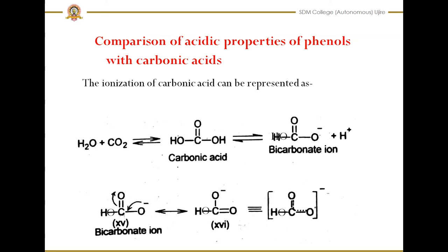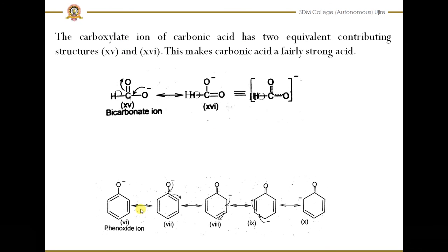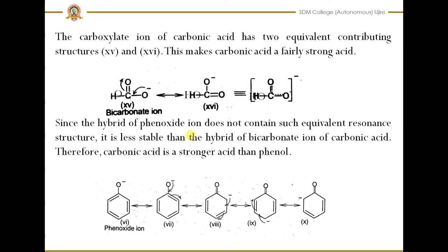Similar to carboxylic acid, carbonic acid gives two equivalent resonance structures for the bicarbonate anion. In the case of phenols, although we get more resonance structures (structures 8, 9, 10), these are less stable because the negative charge migrates to the less electronegative carbon atoms — making those structures not equivalent. But in the bicarbonate anion, the two structures are equivalent with the charge on electronegative oxygens only. Therefore, carbonic acid is a fairly stronger acid compared to phenol.